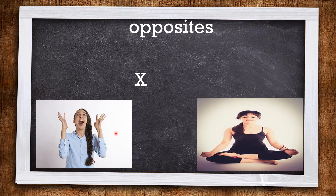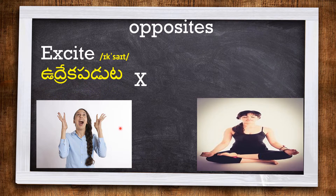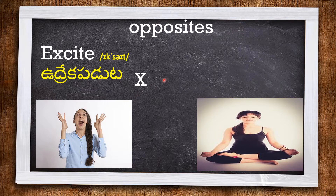In part 2, the first word is EXCITE — this lady is getting excited. And the opposite of excite is CALM.